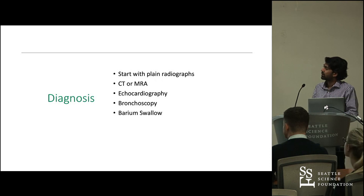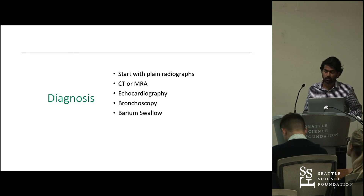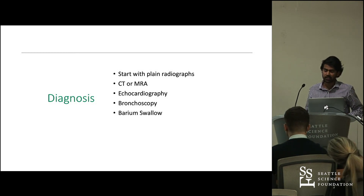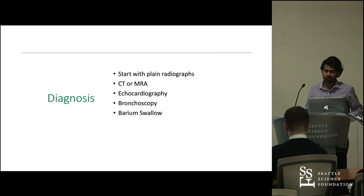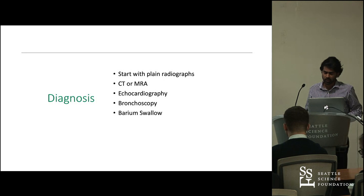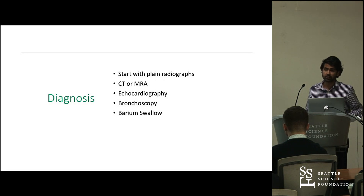For diagnostic criteria, you want to start off with plain radiographs. It's a very rare anomaly — 80% of the population has a normal variant according to the Bergman Atlas. But if you're a clinician suspicious of a younger patient presenting with any of these symptoms, you want to keep this in the back of your mind. Start with plain radiographs to rule out other causes of respiratory distress and esophageal symptoms first.